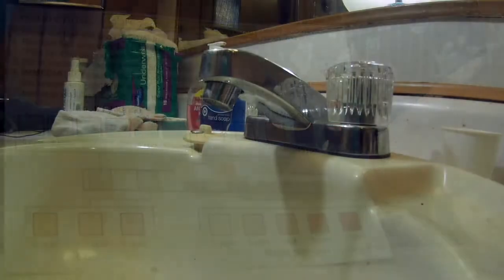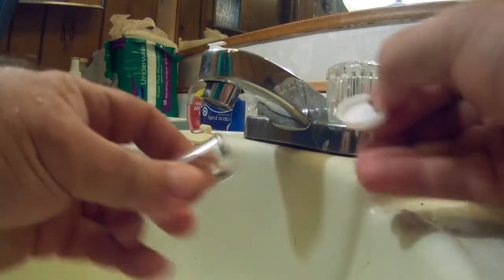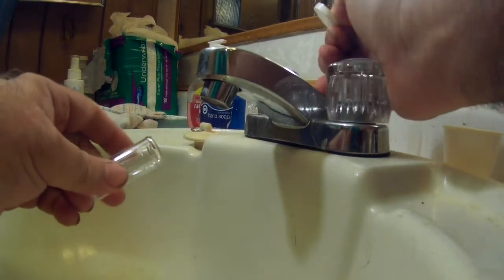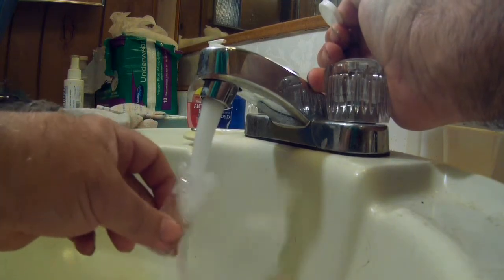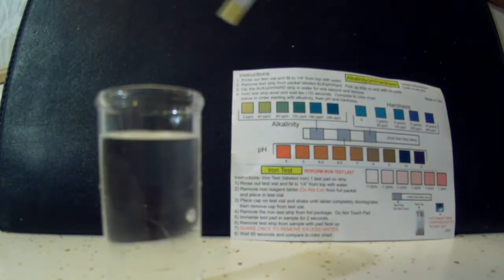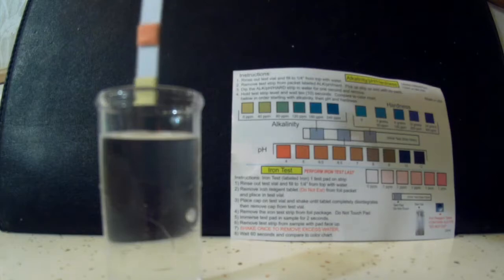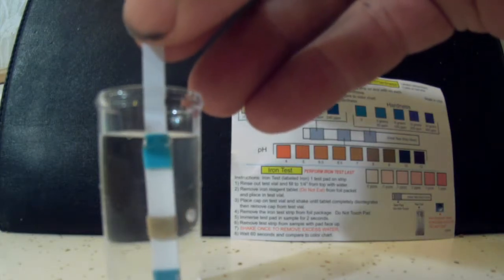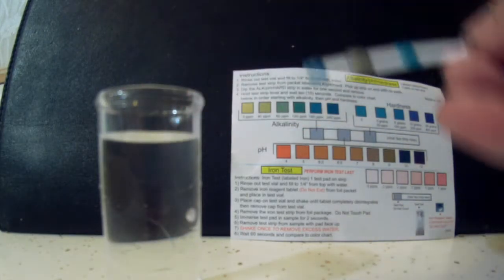And we'll top off with another sample of water and we'll be testing this time for alkalinity, pH and hardness. So now I've got a fresh vial of water, I'll put in my test strip. The instructions say to let it sit for one second and take it out and let it sit flat for 10 seconds while the test colors react.